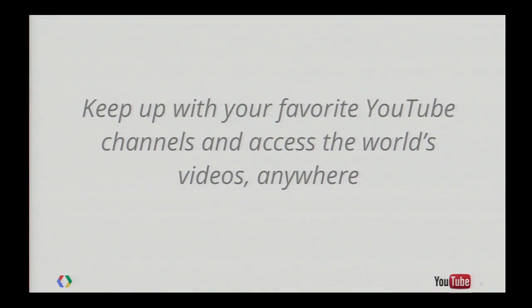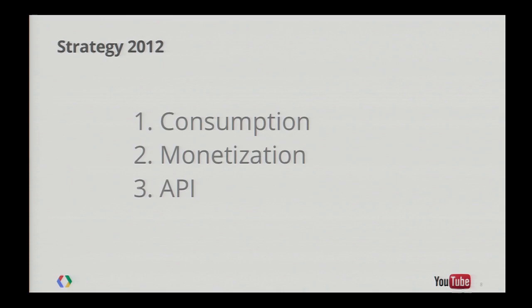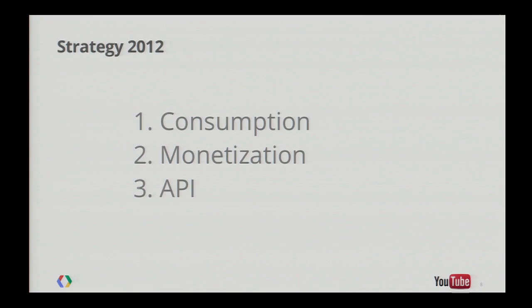It would take some work to get there — we're quite not there yet. Here's our strategy. First, we need to improve the consumption experience a lot. Second, monetization is very important to bring content to mobile — we need content creators to have incentive to enable videos for mobile consumption. And finally, as they say, you cannot spell capitalism without API in it. Opening up the ecosystem is very important.